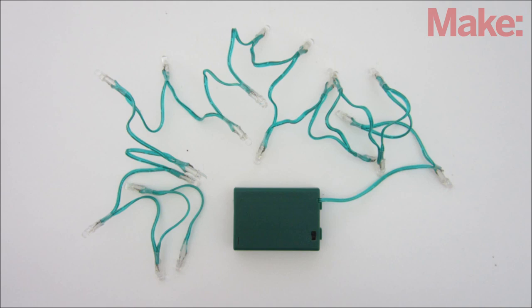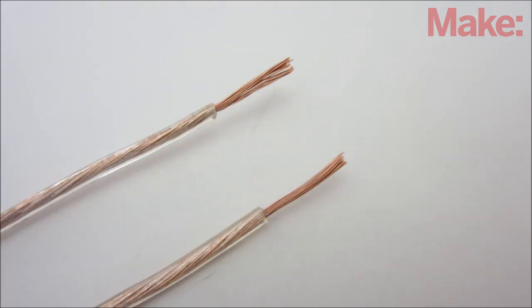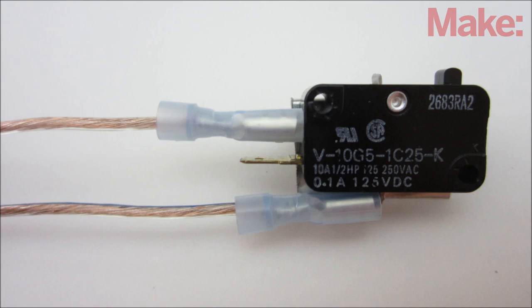Now you need to connect the switch to the light. Take two small pieces of wire and strip the insulation off the ends. I connected one wire to the normally closed terminal and one wire to the common terminal of my switch.